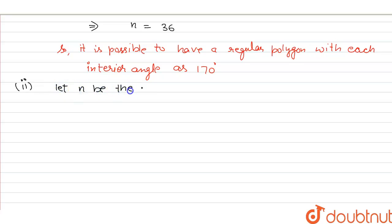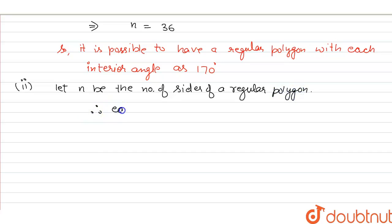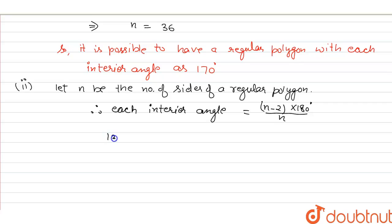Here also, we will use the same formula. Let n be the number of sides of a regular polygon. We set up: 1370 = (n minus 2) into 180 upon n.